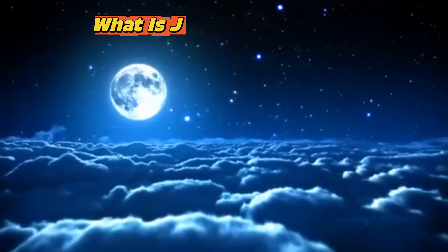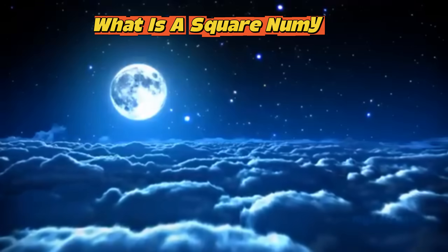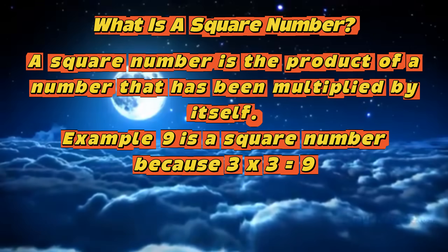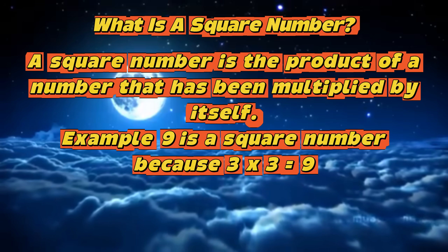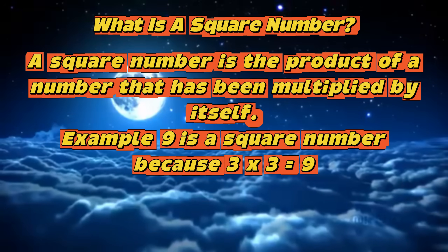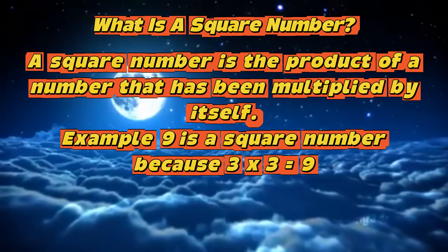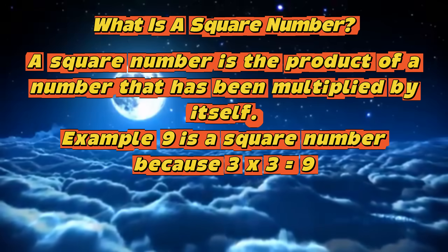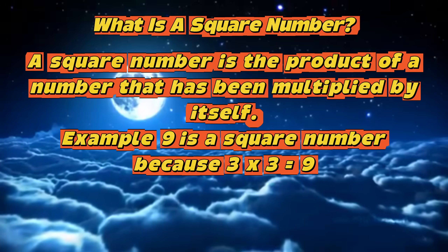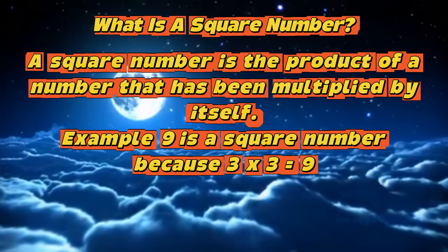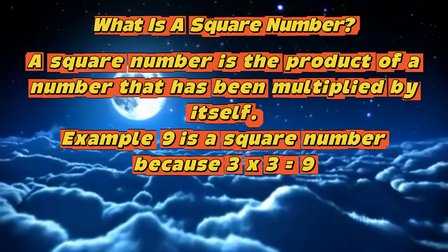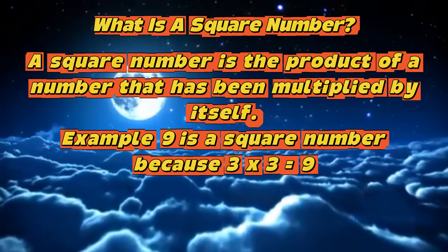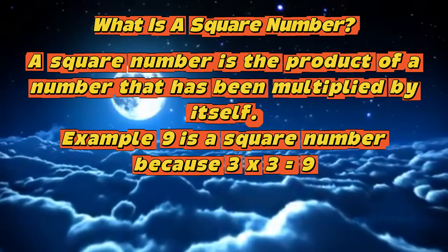And now, let's define square number. A square number is the product of a number that has been multiplied by itself. For example, 9 is a square number because 3 times 3 is equals to 9.